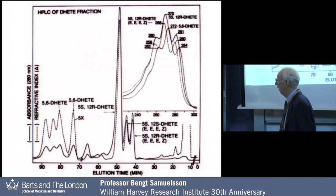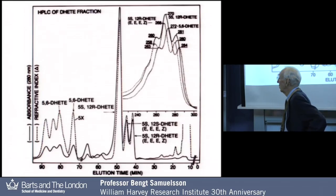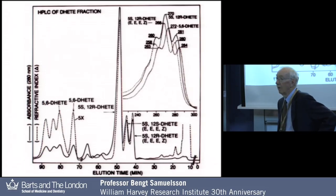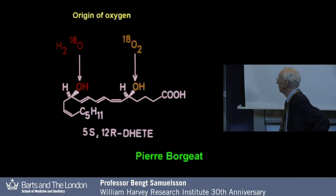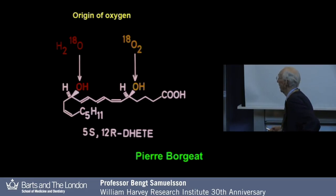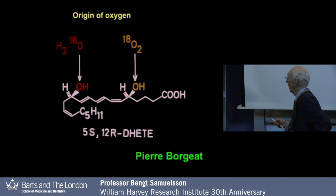With a very simple system, we added arachidonic acid to stimulated peritoneal leukocytes and found a whole group of compounds. This is an HPLC chromatogram, and they all had a conjugated triene system. This work was done in collaboration with Pierre Boitras. We eventually determined the structure of one of the products — it was a 5,12-dihydroxy derivative of arachidonic acid.